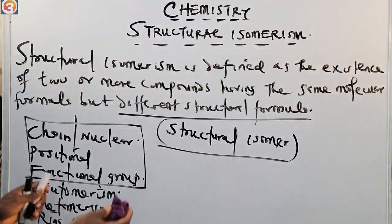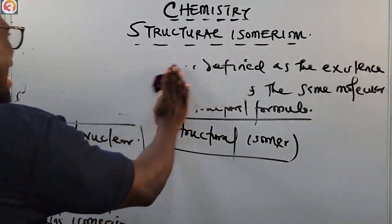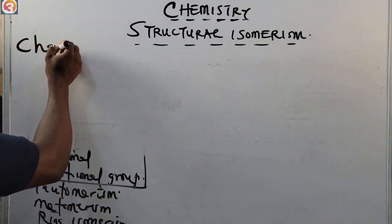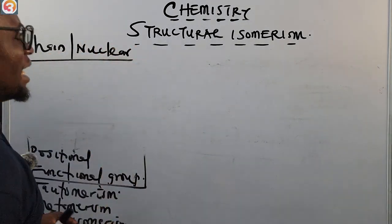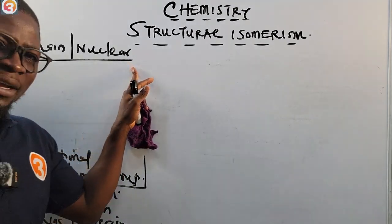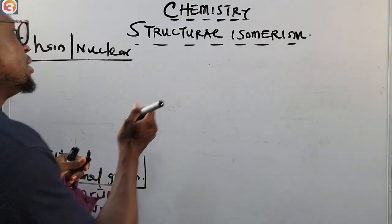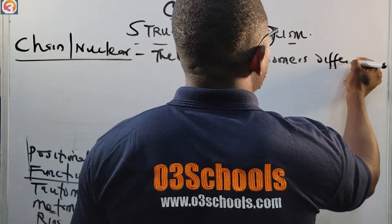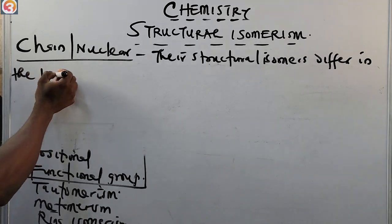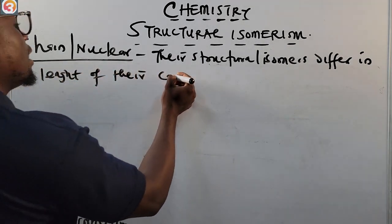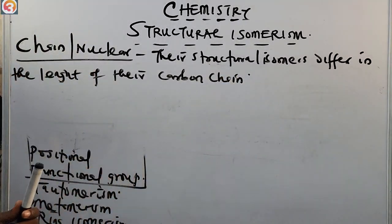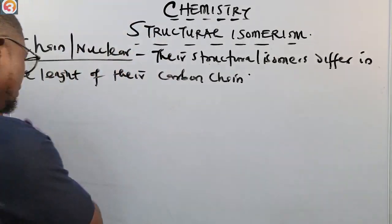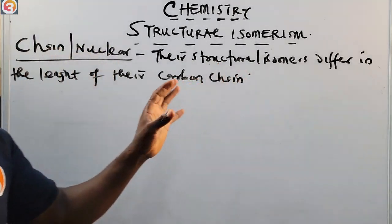Chain isomerism — also called nuclear isomerism — is a type of structural isomerism whereby the structural isomers differ in the length of their carbon chain. For example, if we take pentane, C5H12, which has five carbon atoms and twelve hydrogen atoms, that is normal pentane written as CH3-CH2-CH2-CH2-CH3.